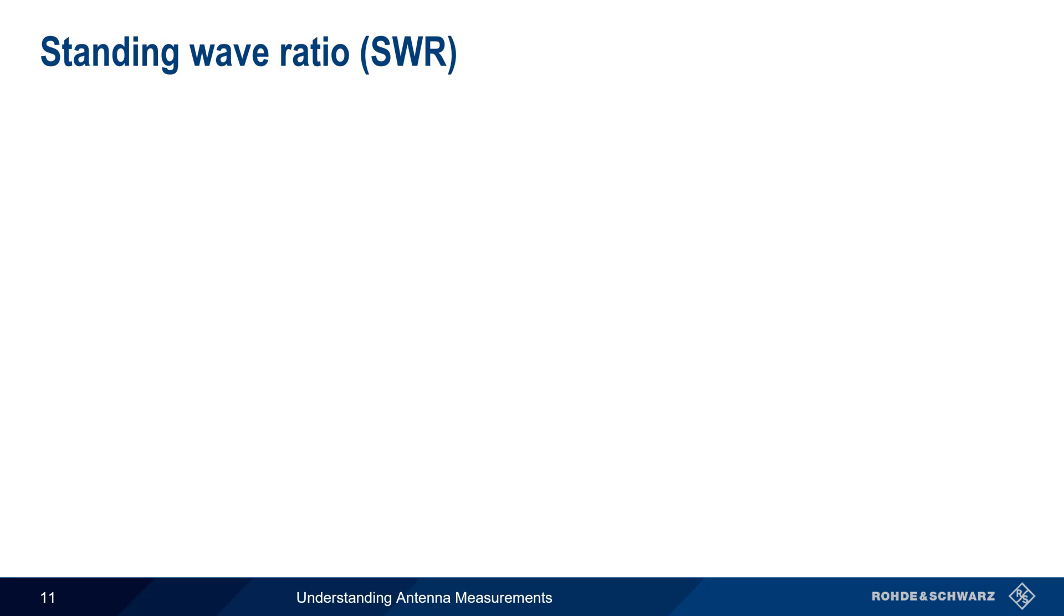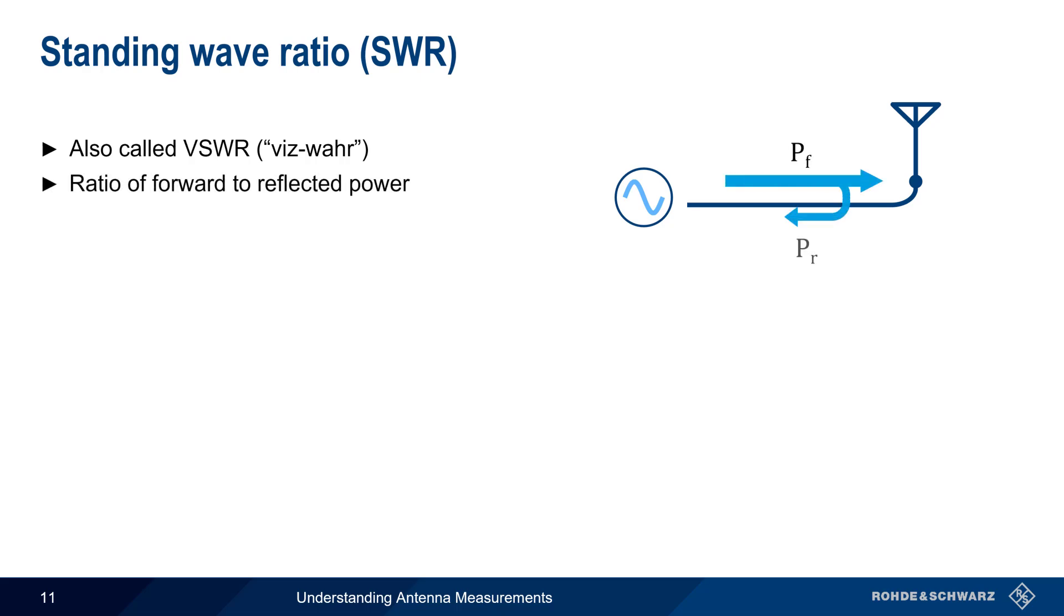Standing wave ratio, also sometimes called voltage standing wave ratio, or VSWR, is the ratio of forward power to reflected power. As can be seen from this equation, an SWR value of 1 would correspond to 0 reflected power, and this is the ideal or best-case scenario.